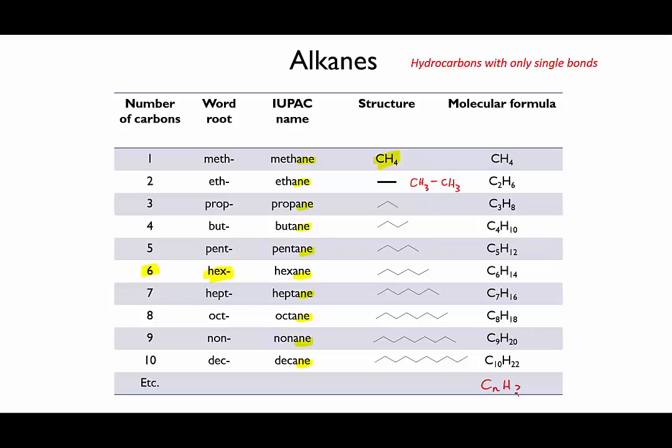Well, the pattern is that for N carbons, an alkane molecule must have 2N+2 hydrogens. This is because there are two hydrogens on every carbon, but the two end carbons have an extra one each. So that's alkanes.